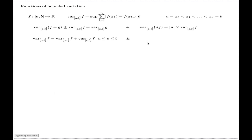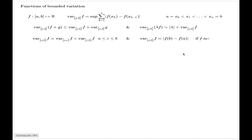Another simple observation is that the variation is just equal to the difference of the endpoint values of the function, given that the function F is monotone. All of these properties I leave for you to establish; they are all relatively simple but require a careful epsilon-type argument involving the definition of supremum.